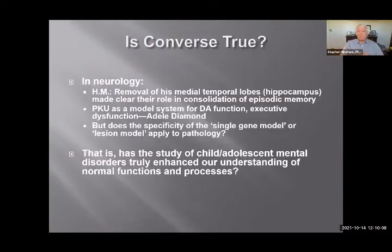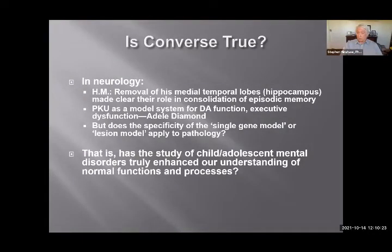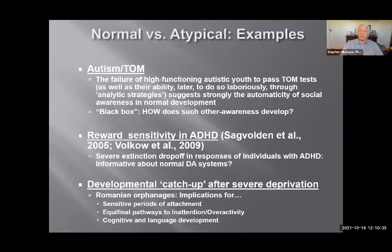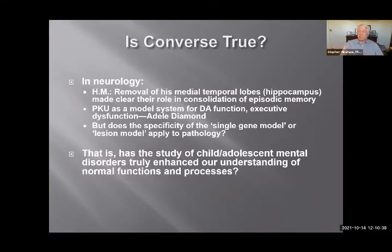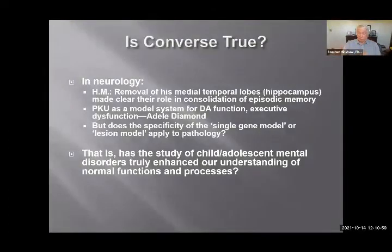The flip side is that if we really learned about psychopathology, wouldn't we learn a lot more about normative development? This is a long tradition in neurology — famous single case studies like Phineas Gage and HM, whose bilateral removal of the hippocampus set the stage for understanding its role in translating short-term to long-term memory. PKU, a single recessive gene double allele, is a model for how executive functions and intelligence develop. But most forms of psychopathology aren't a single accident or surgery or gene — they're much more complex. How could the clinical work and research we do in psychopathology inform theories of normative development?